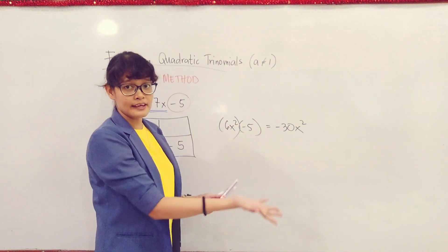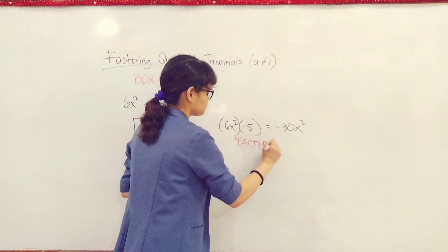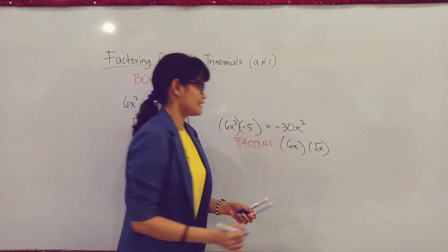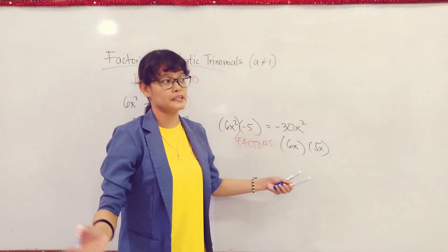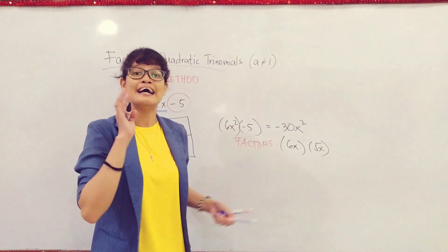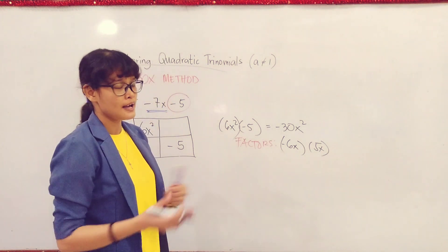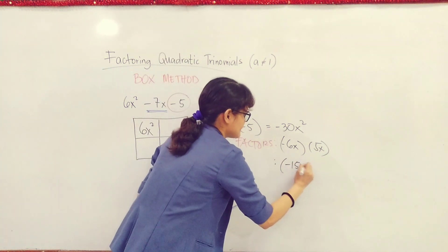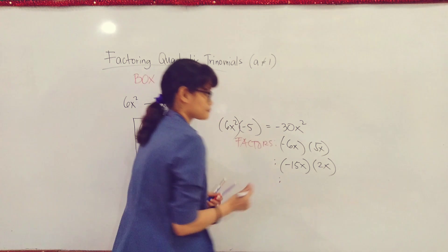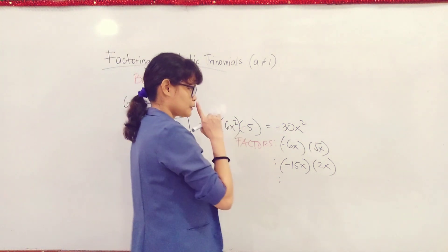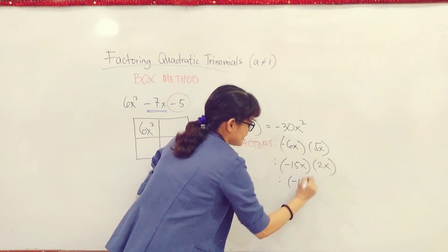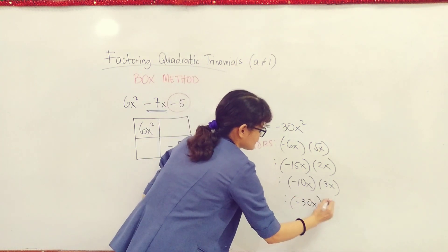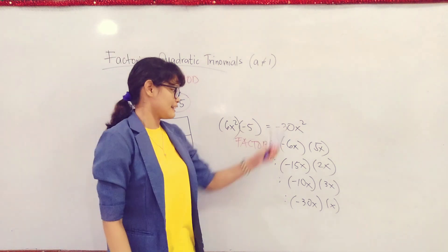So let's try looking for the factors of -30x². So you have the factors: -6x times 5x. Between 6x and 5x, which is greater? Obviously, it is 6x. So 6x is the one you'll give the negative sign. What else are the factors of -30x²? You have -15x and 2x. You also have -10x times 3x. And you also have -30x and x. In reality, you don't need to list all of these. If you can quickly find the two factors that when added equal the middle term, that's better.